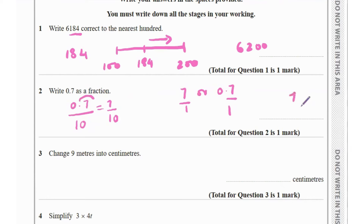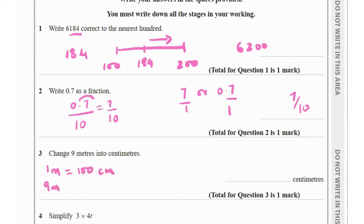Question 3 says change 9 metres into centimetres. 1 metre is equal to 100 centimetres, so 9 metres equals 9 times 100, which is 900 centimetres.